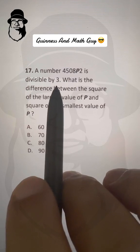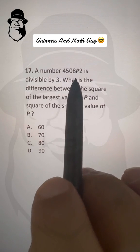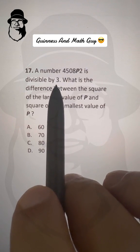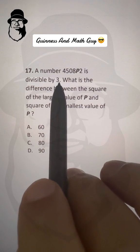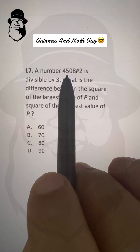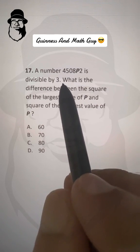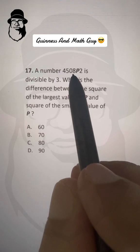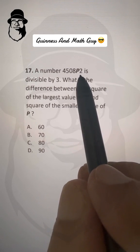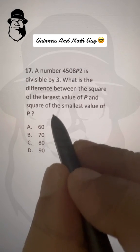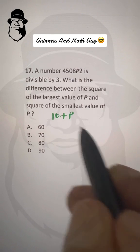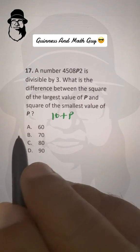Now, when we say it is divisible by 3, the sum of the digits must be divisible by 3. So, 4 plus 5 is 9. We can cross them because 9 is divisible by 3. Now, 0 plus 8 plus 2 is 10. It means 10 plus P must be divisible by 3.